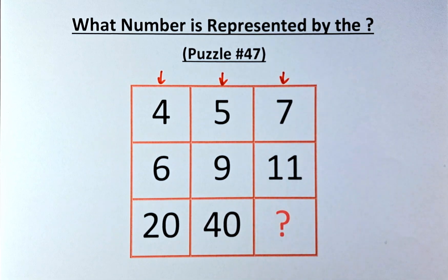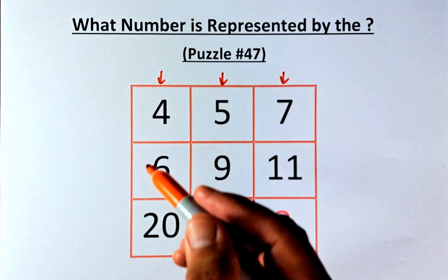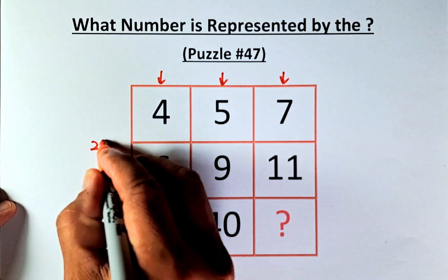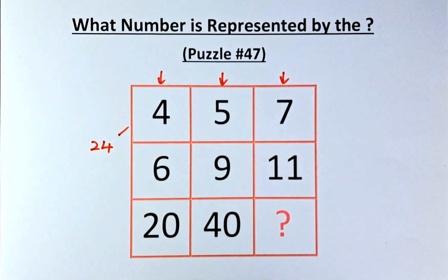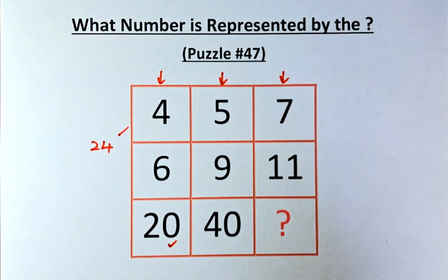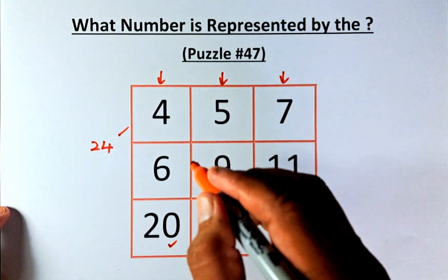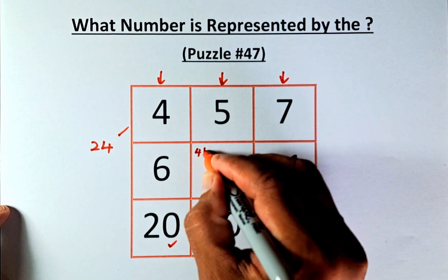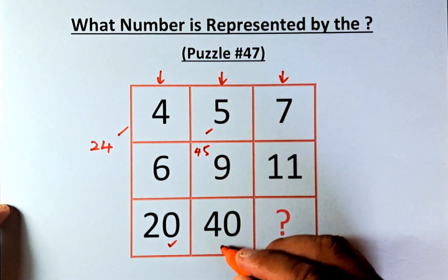What you're going to do is multiply 4 by 6, which is 24, and then minus the first number. So 24 minus 4 is going to be 20. Similarly, in the second column, we have 5 times 9 is 45, and then you minus 5, and that will give us 40.